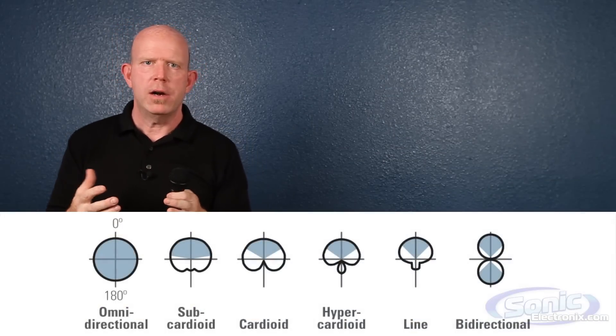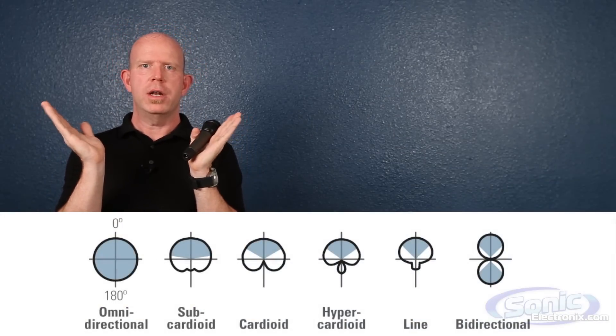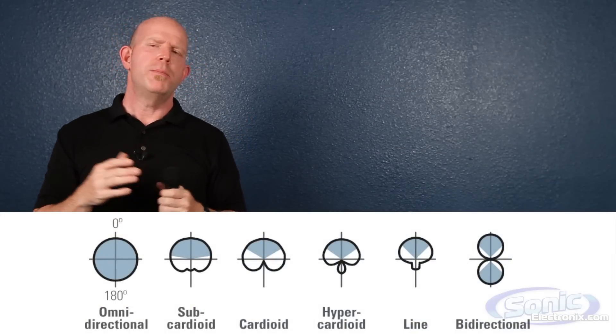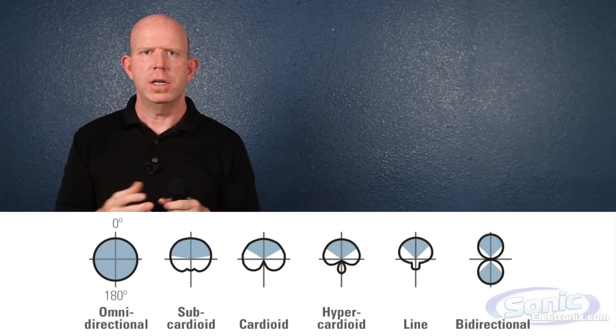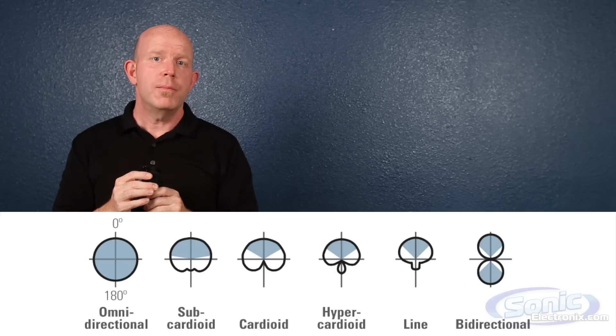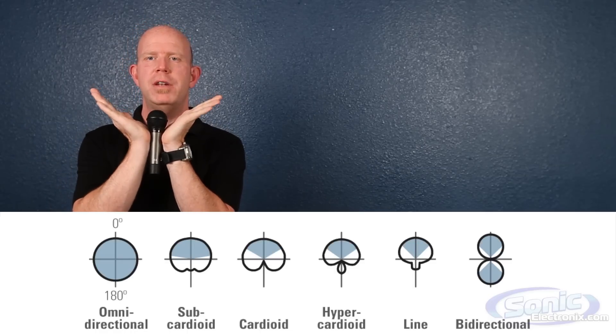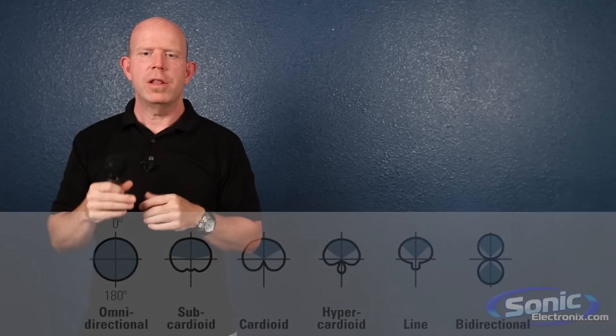There's also a subcardioid pattern which has a wider acceptance angle than a cardioid. That can be useful when you're picking up more than one vocalist, maybe in a choir or a group vocal situation. The acceptance angle of a subcardioid mic is 170 degrees.